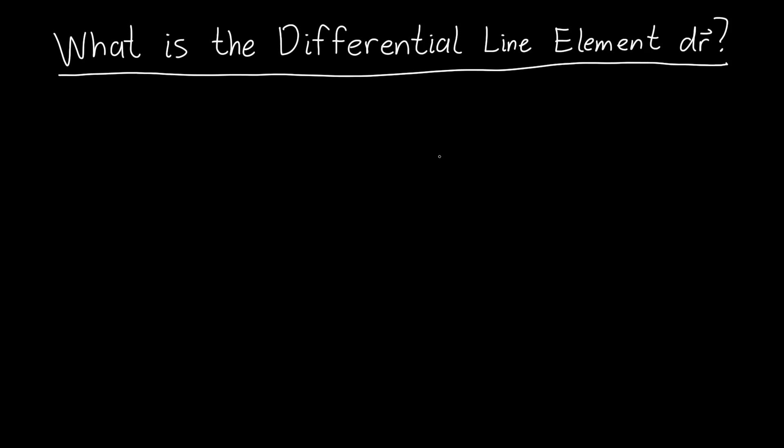So in this video we're going to learn what the differential line element dr actually is. In physics it's often called dl with a little vector symbol over the l. So where does this show up?